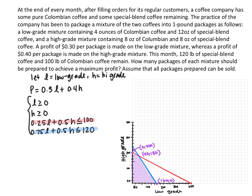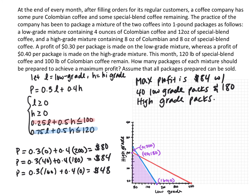Take the three feasible points and plug them into the objective function P = 0.3L + 0.4H to find which maximizes profit. Testing all three, we find that the maximum profit is $84, and it occurs when you sell 40 low-grade packages and 80 high-grade packages.